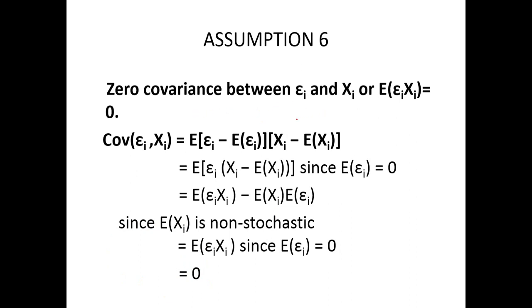Zero covariance between the error term and the independent variable xi. So if you take the covariance between the error term and the independent variable, it has to be zero.